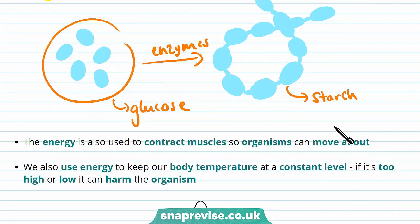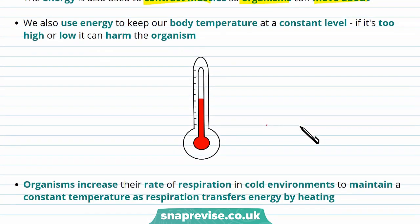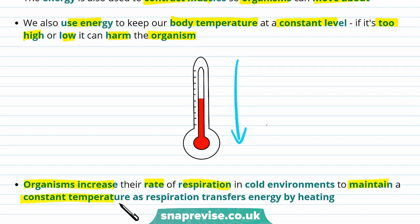Energy from respiration is also used to contract muscles, which means that organisms can move about. Another use is to keep our body temperature at a constant level. If our body temperature is too high or low, it can harm the organism. If the temperature drops, organisms increase their rate of respiration to maintain a constant temperature, as respiration transfers energy by heating.